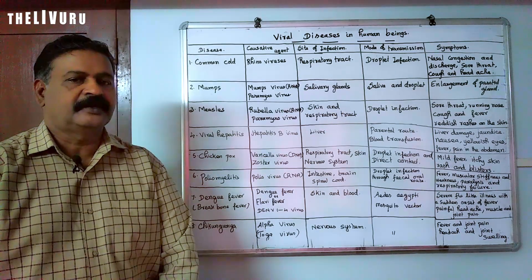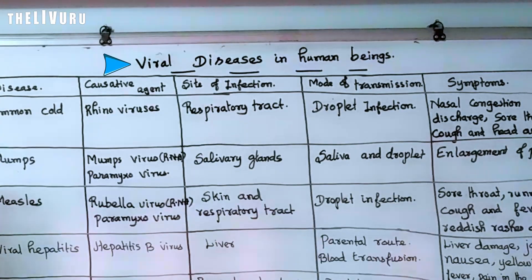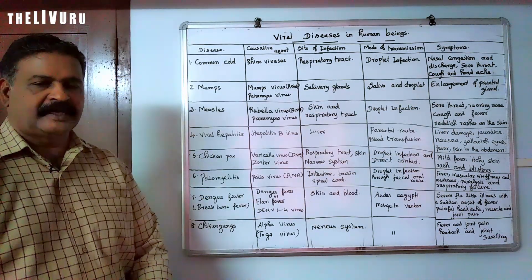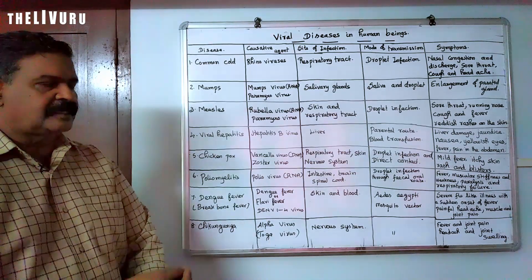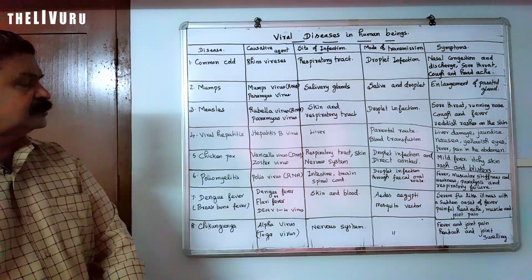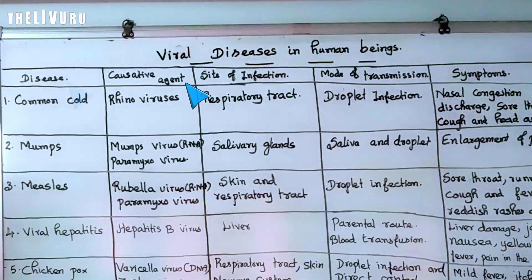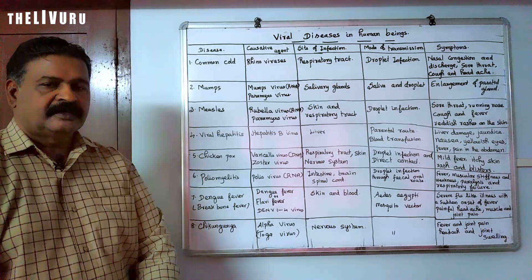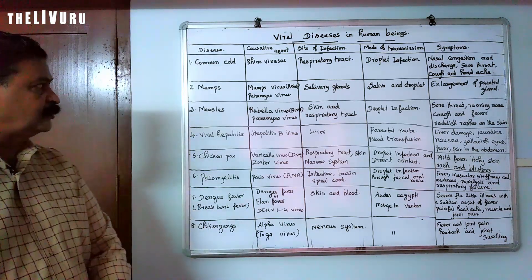In this video, we are going to see a brief discussion about the viral diseases which are found in human beings. We are going to see the disease, causative agent, site of infection, mode of transmission, and symptoms. We will also look at droplet infection, the fecal-oral route, and contamination by drinking and eating food and water.